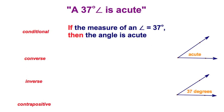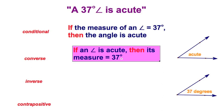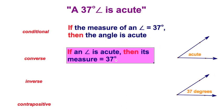Now, we're going to take this statement and we're going to reverse it. Reverse it means I'm going to start with my conclusion and point in the other direction. If an angle is acute, then its measure is 37 degrees.